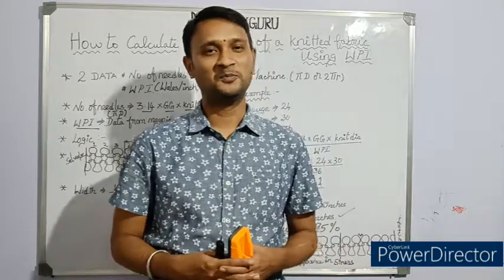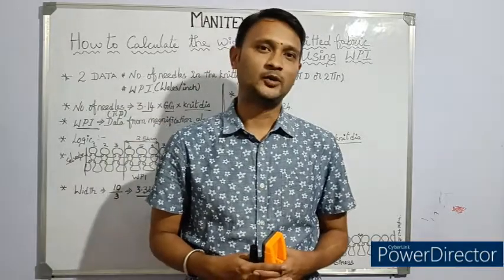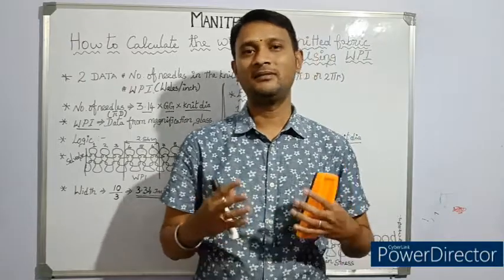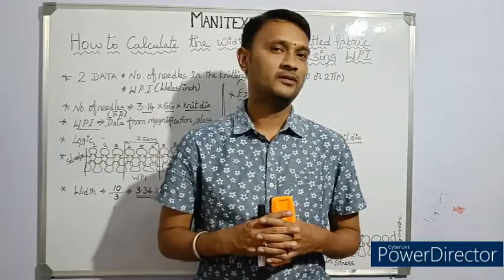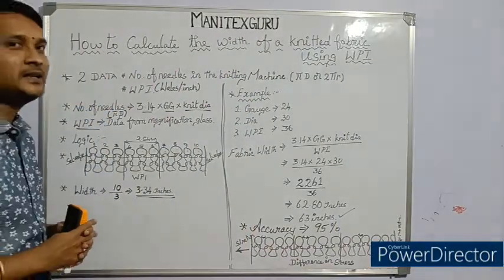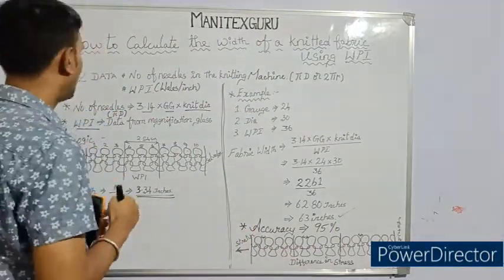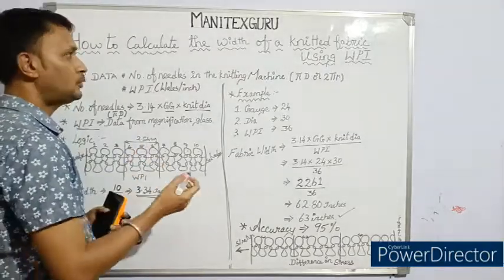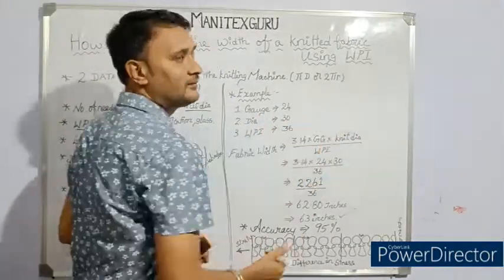Hello all, welcome to ManitexGuru. In this video we are going to learn about how to calculate the width of a weft knitted fabric using wales per inch. To calculate the width we need two data: number one, number of needles in the knitting machine, and number two, wales per inch which is already given in the question.